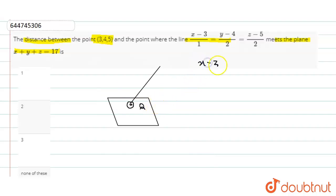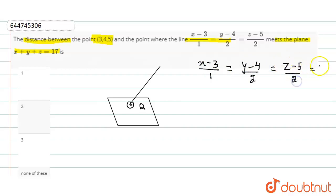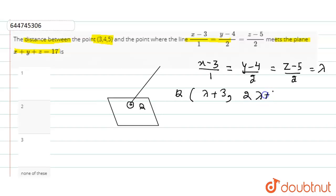I already have the equation of the line: (x − 3)/1 = (y − 4)/2 = (z − 5)/2 = λ. So I can find the general points on the line — that is, the point of intersection of the plane and line — which will be of the form (λ + 3, 2λ + 4, 2λ + 5).